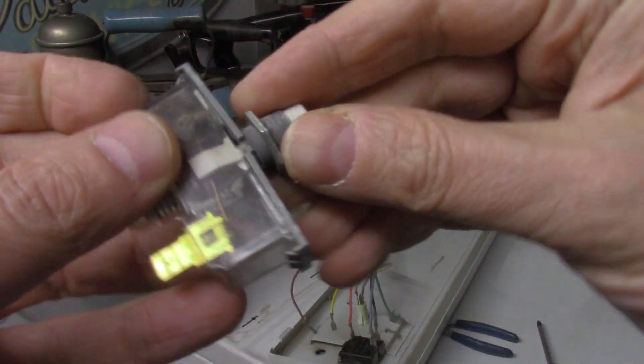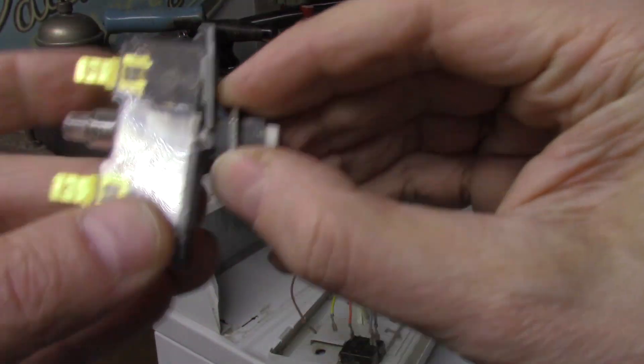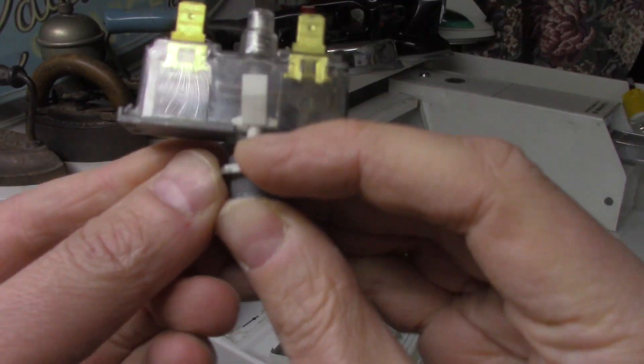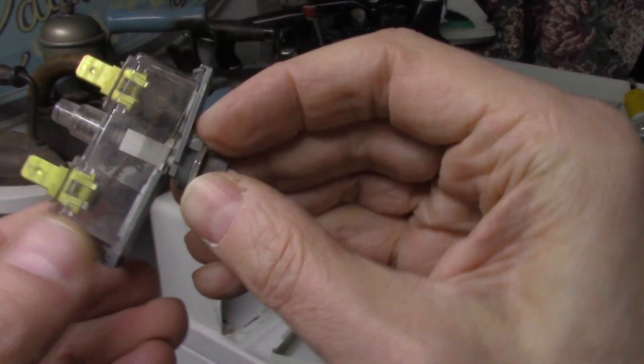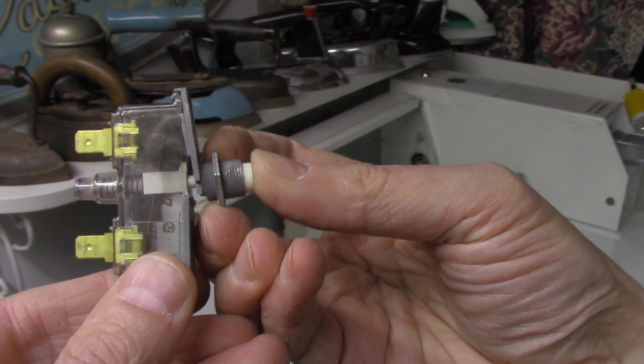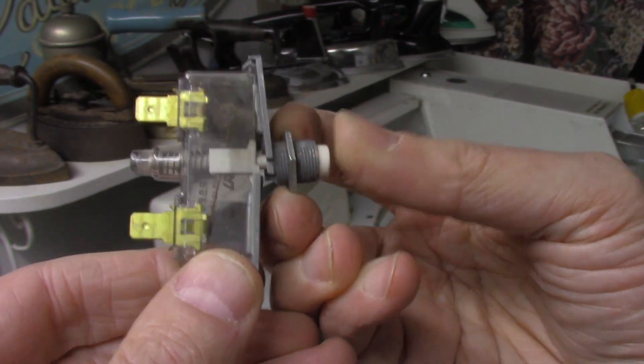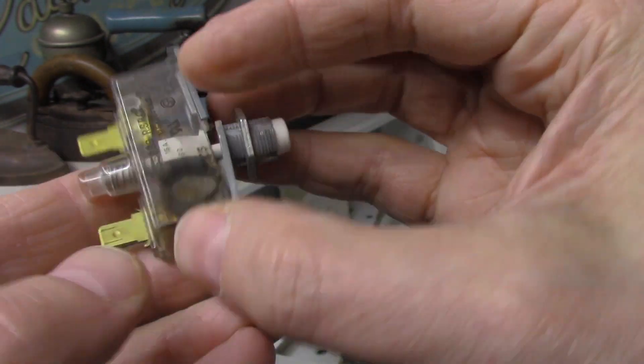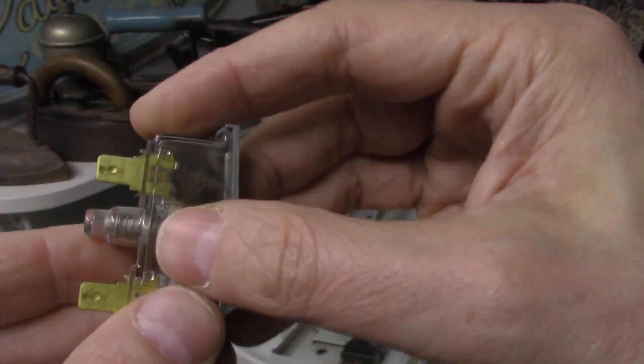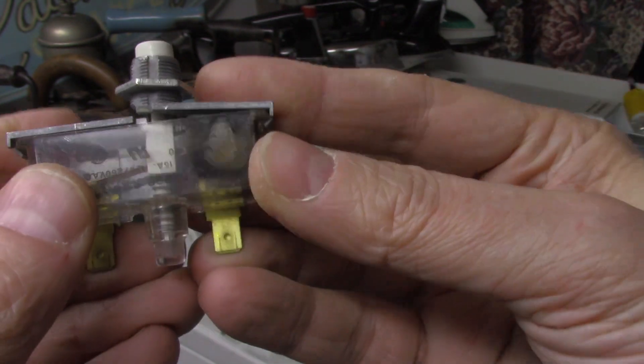You can see how the power switch is busted up. When you press on the power switch, the whole housing moves with the switch. That's probably the failure of the switch. You can see how it was arcing as the switch was failing and darkening the plastic housing.